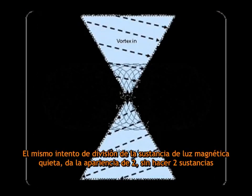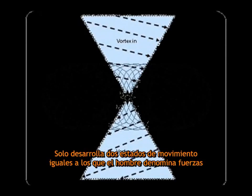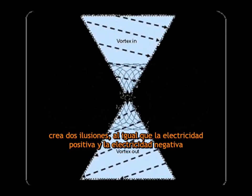The very attempt to divide the one substance, still magnetic light, gives the appearance of but does not make two substances. It only develops two equal states of motion which man calls forces. It but creates two illusions, just so with positive electricity and negative electricity.